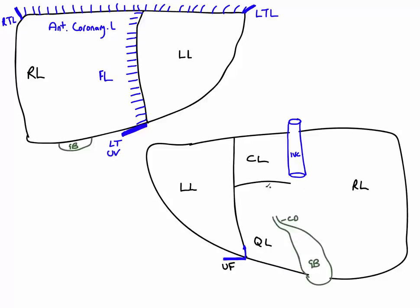The final detail to add to this diagram is the porta hepatis — the region on the visceral surface of the liver where structures pass into and leave the liver. There are three important structures here, the same structures associated with the portal triad. The first is the hepatic artery, with branches splitting to the left and right sides of the liver.